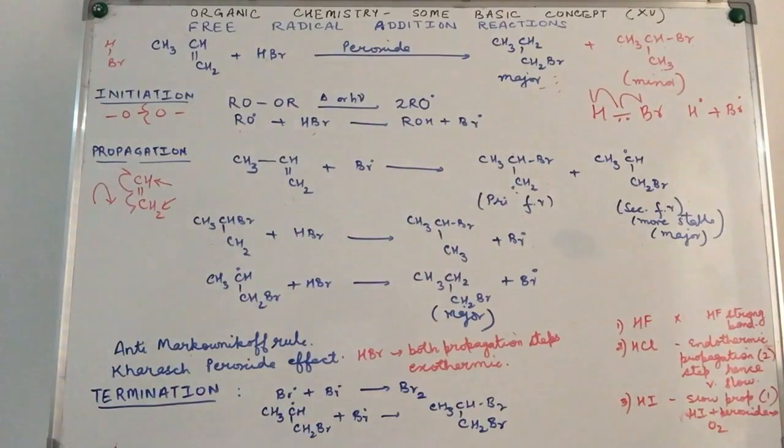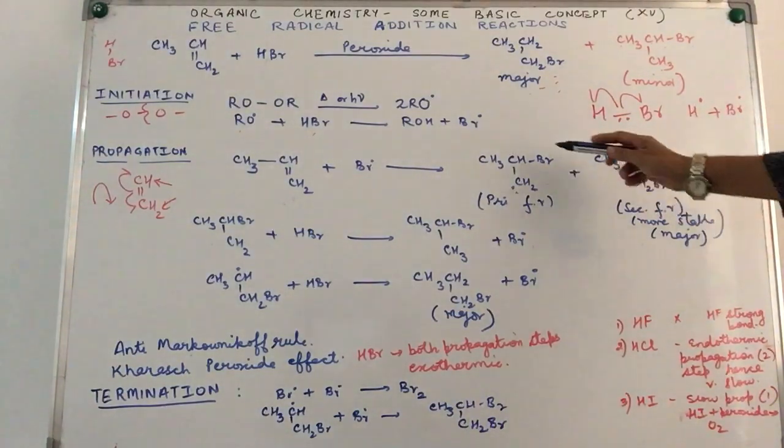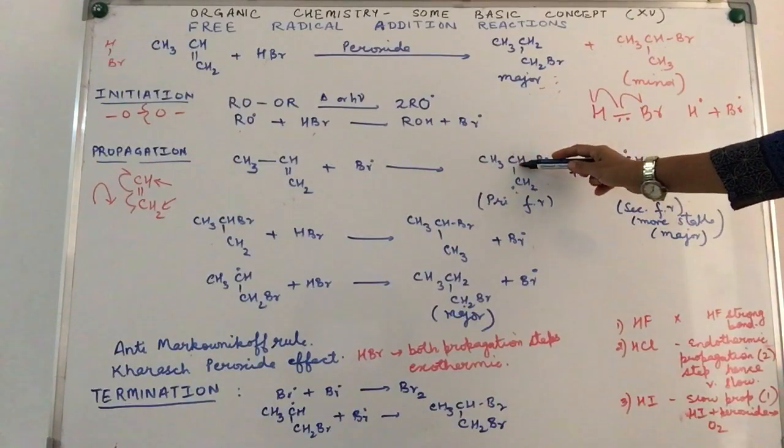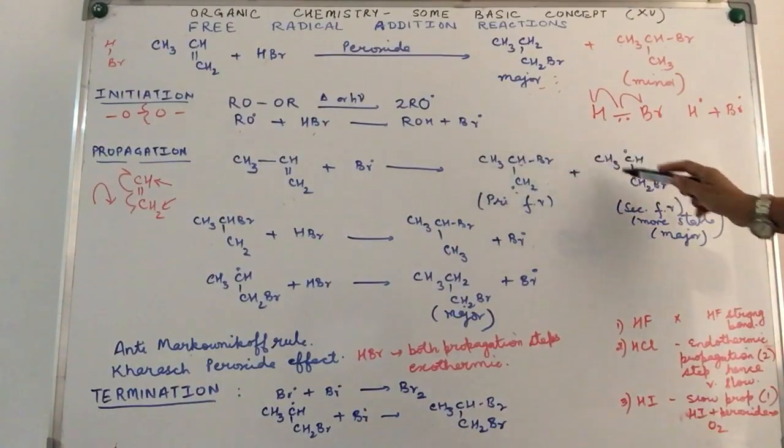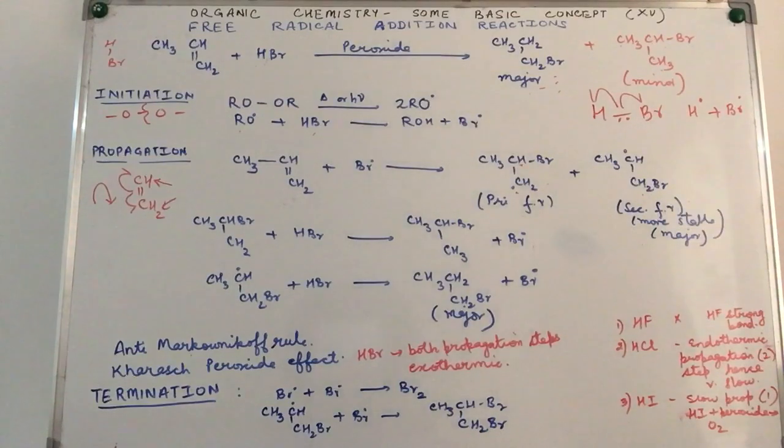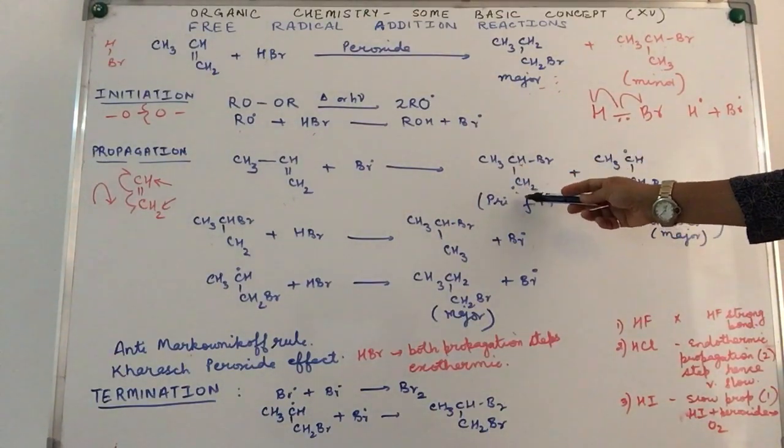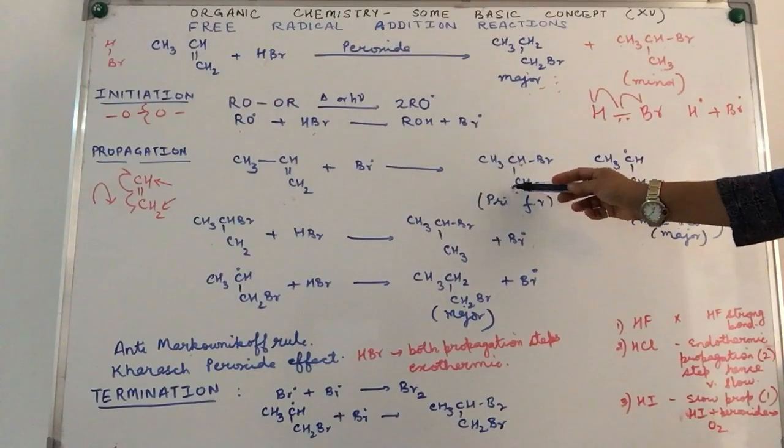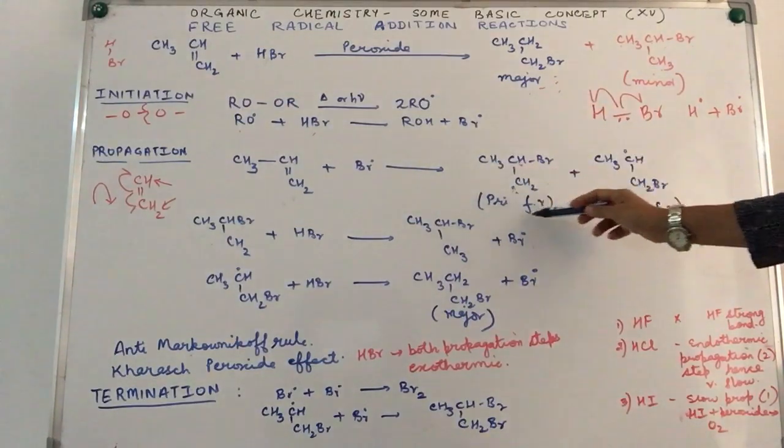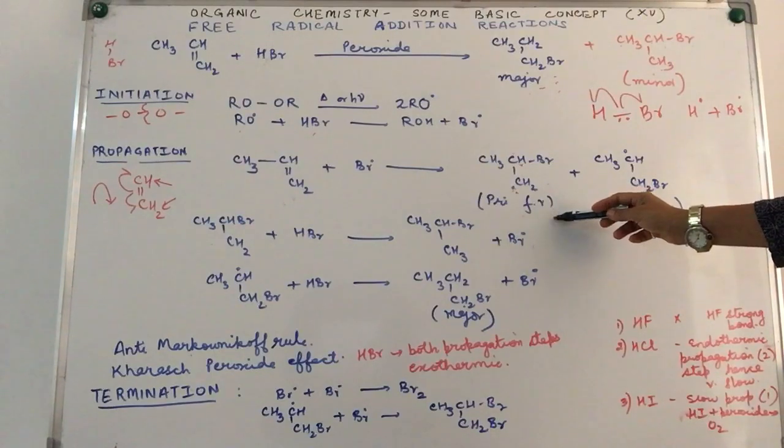Let's say we talk about both the possibilities. We draw the structure for both of them. So bromide radical attacks the second carbon atom. Bromide radical attacks the first carbon atom. With the result, the other carbon which is left will have an unpaired electron. In other words, now this becomes a free radical.